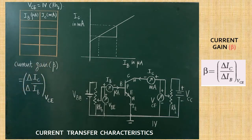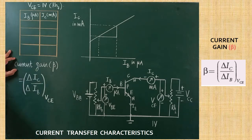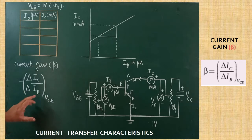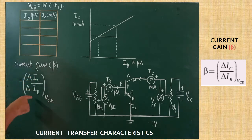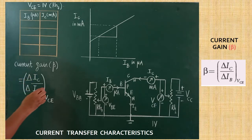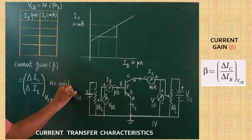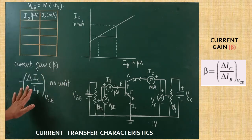Now I am going to define current gain in CE mode — common emitter mode. Current gain beta of the transistor in CE mode is defined as the ratio of change in collector current to the change in base current at constant collector-emitter voltage. This is the definition of current gain. Both quantities are currents — IC is measured in milliamperes and IB is measured in microamperes. Since both are in amperes, the units cancel, and finally the current gain does not have any unit.